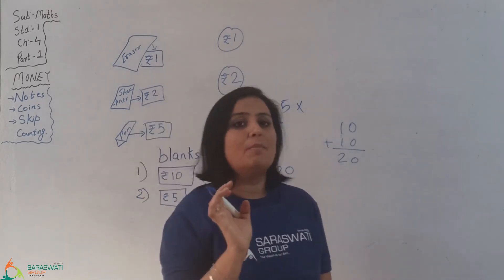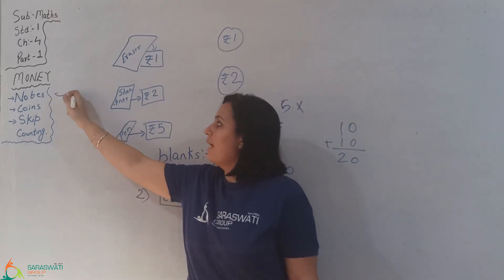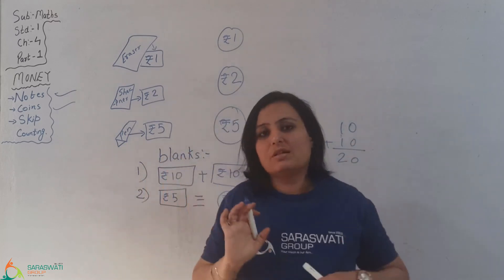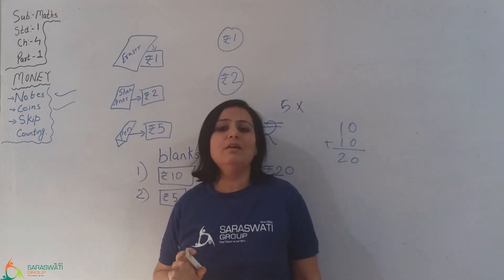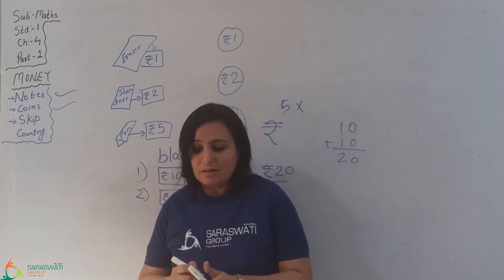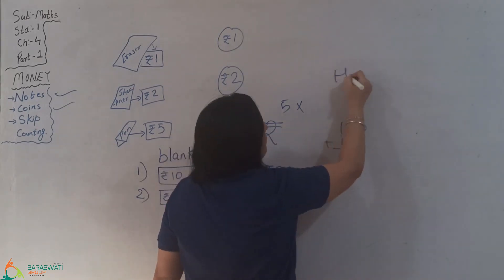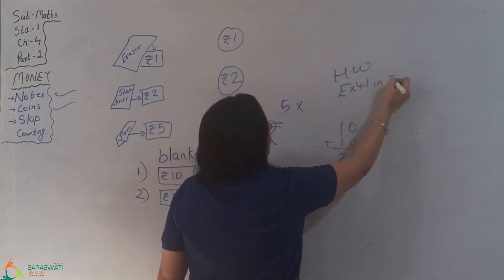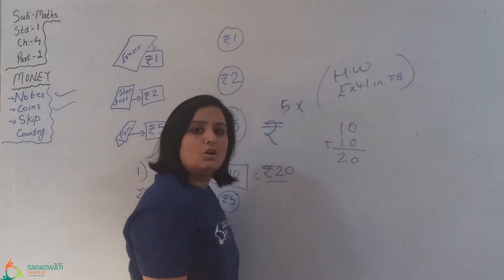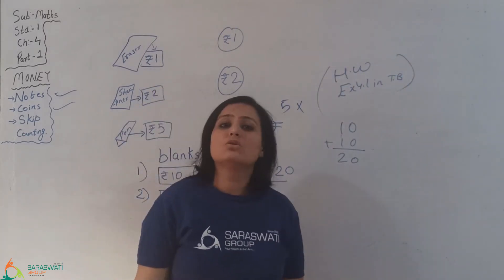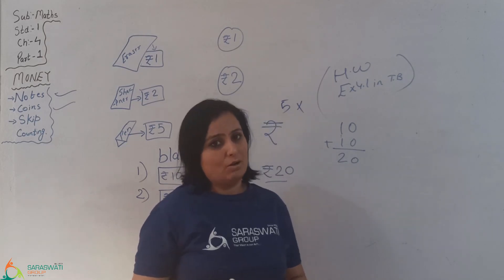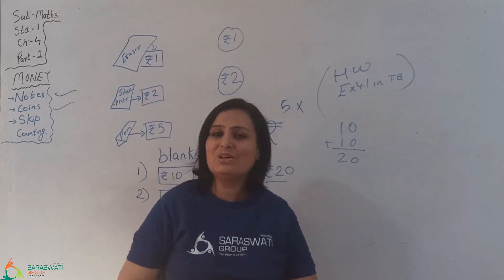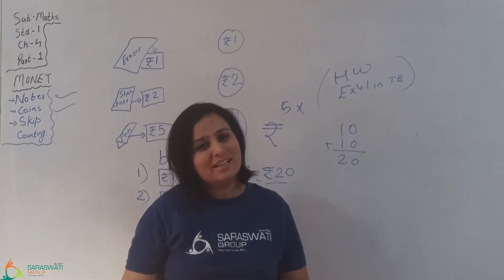So children, this is all about today's topic — notes and coins. Skip counting main aaj nahi le rahe because I think this much is enough, so we will take this topic in our next session. Homework for the day is exercise 4.1 in the textbook. So with this children we come to an end of our session. I hope that you will see notes and coins of different currencies at your home. Bye for now, take care.